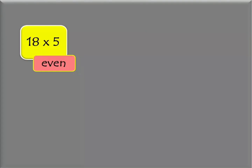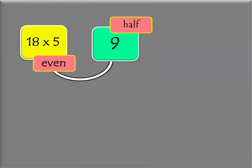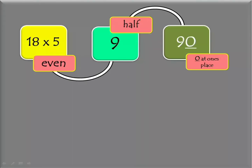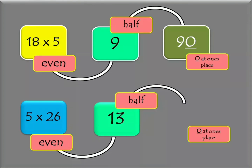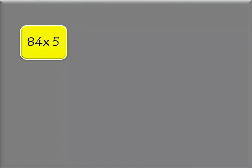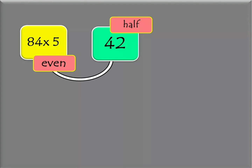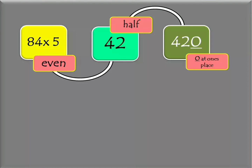Example number 3: get the product of 18 and 5. 18 is an even number. If we divide 18 by 2 to get its half, we get 9. If we affix 0 to its ones place, we get 90. The product of 18 and 5 is 90. Example number 4: what is the product of 5 and 26? 26 is an even number, half of 26 is 13, affix 0 at ones place — from 13 it becomes 130. Therefore 5 times 26 is 130. For 5 and 84: 84 is even, half of 84 is 42, affix 0 — from 42 we get 420. The product of 5 and 84 is 420.